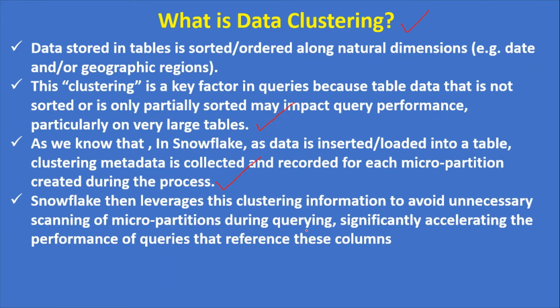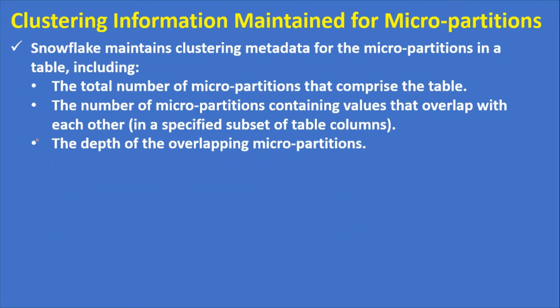What this means is: suppose a table has 100 partitions. When you try to retrieve data using a filter condition that is part of your clustering key, Snowflake may scan only one or two partitions. By doing so, your query performance will improve. That is what the clustering information maintained for micro-partitions achieves.